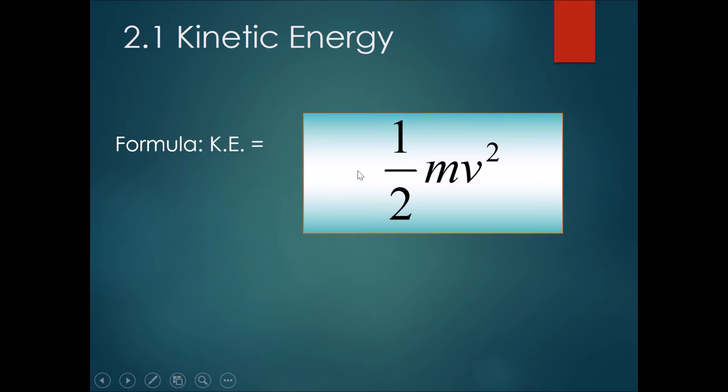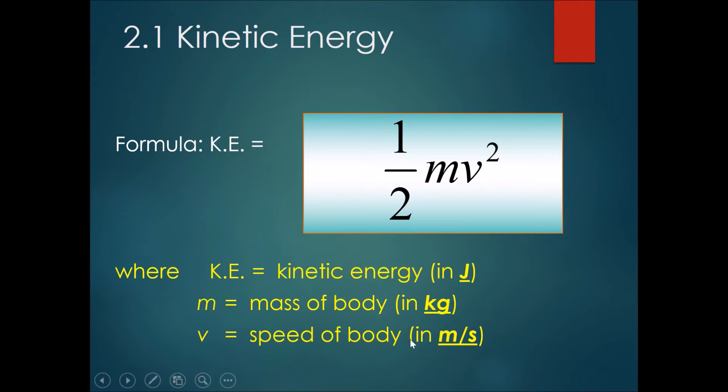The formula is KE equals half mv squared, where KE is kinetic energy in joules, m is the mass of the body in kilograms, and v is the speed of the body in meters per second.